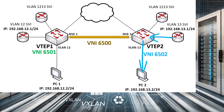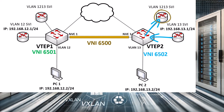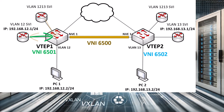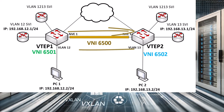On the way back, a similar process takes place, where the packet is sent to SVI 13, routed to SVI 1213, and switched across the transit VNI of 6500. Once VTEP1 is reached, routing will take place again, from SVI 1213 to SVI 12, and then the packet will be switched to PC1. Notice that the same VNI is traversed between VTEPs in both directions — and that's why it's called symmetric IRB.